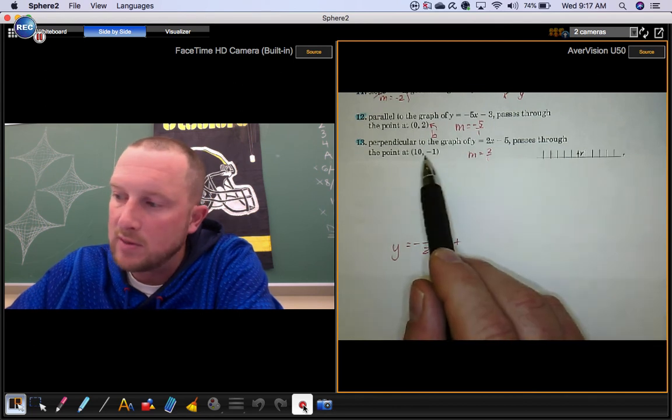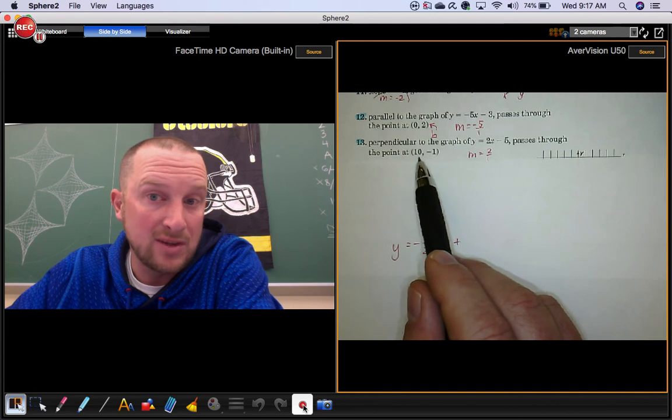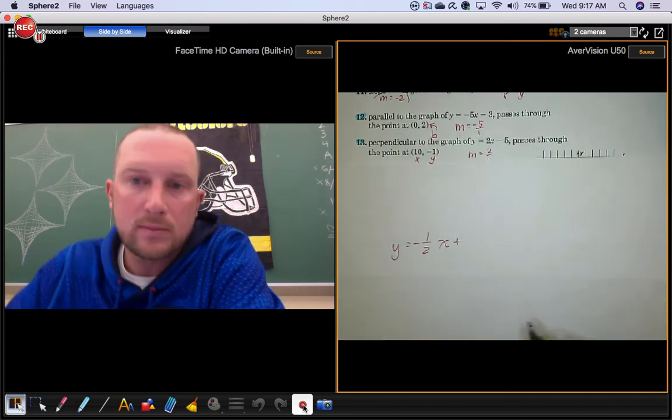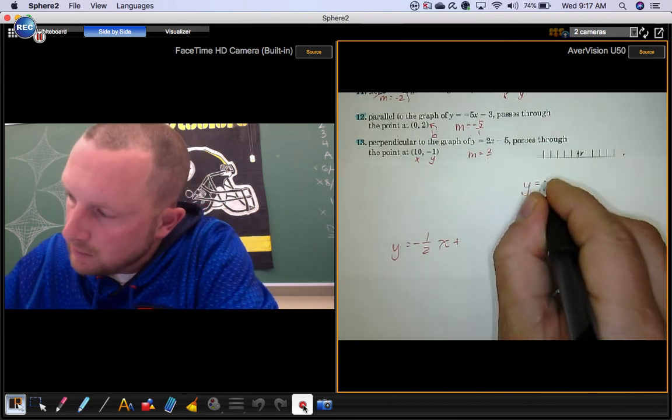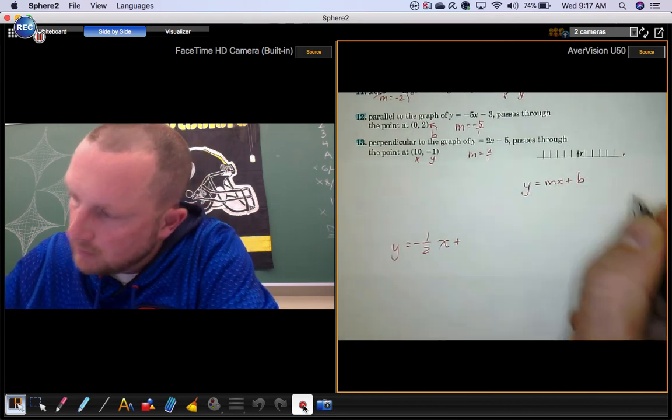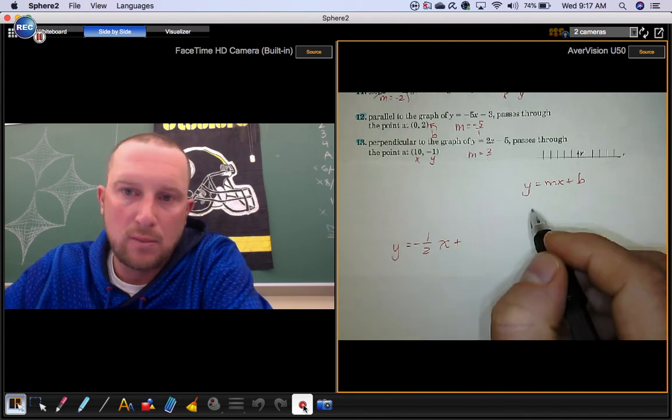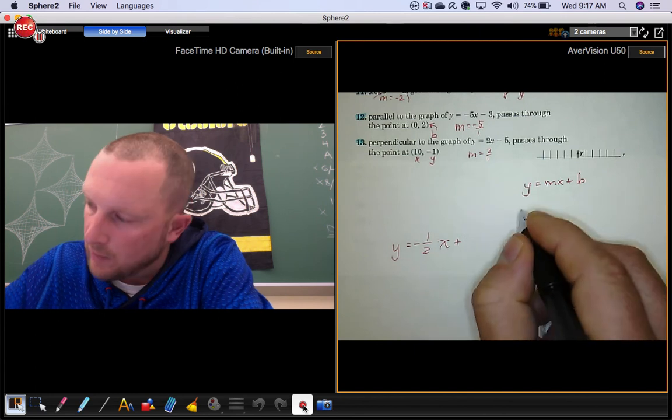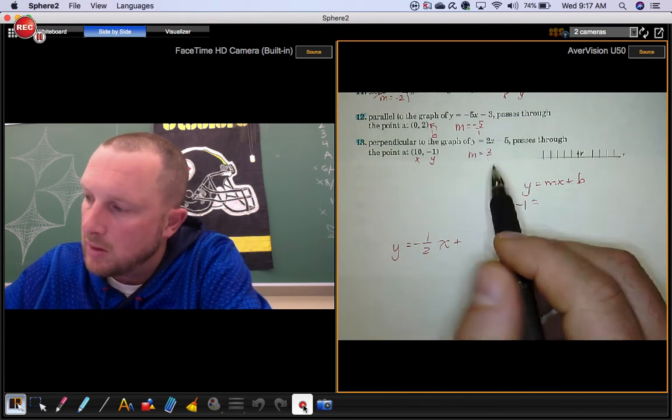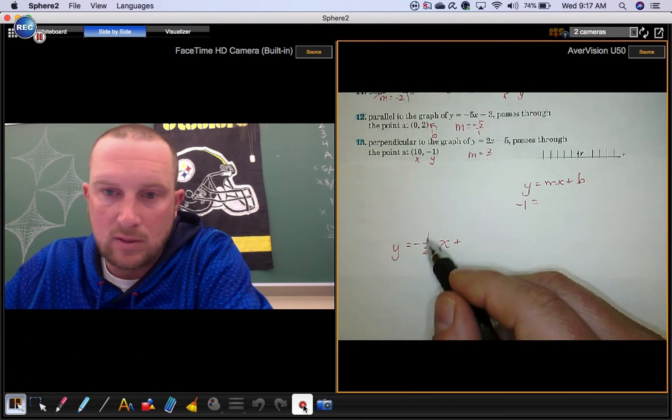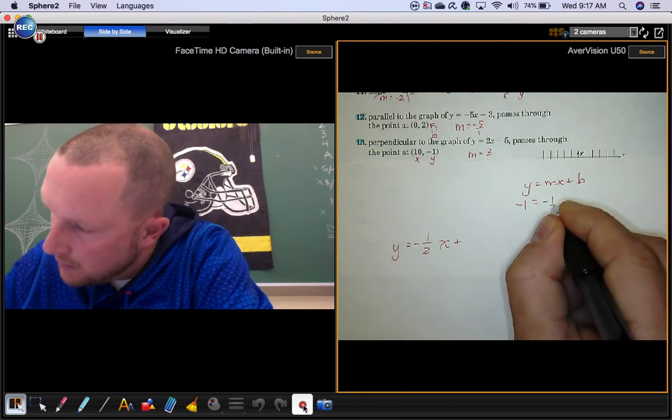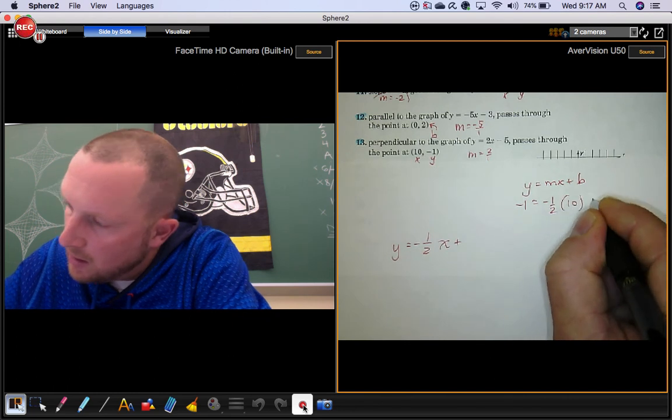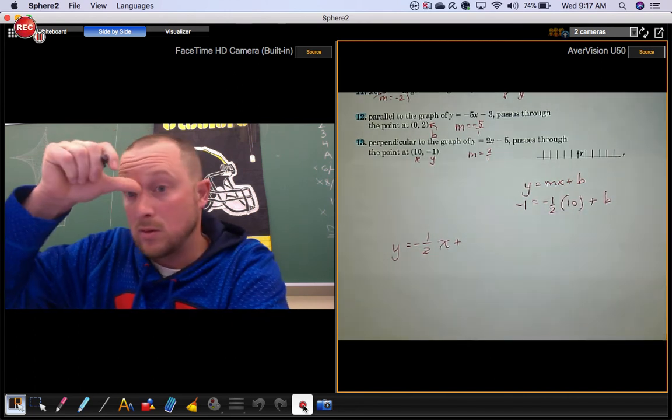The y-intercept is not this point, because that's not 0. But this is an x and a y. Plug in your y, your m, and your x. Our y is negative 1. Our m is negative 1 half. Our x is 10. We need to find the y-intercept.